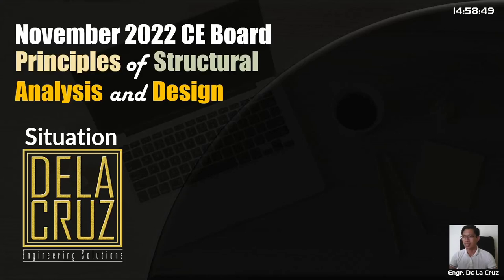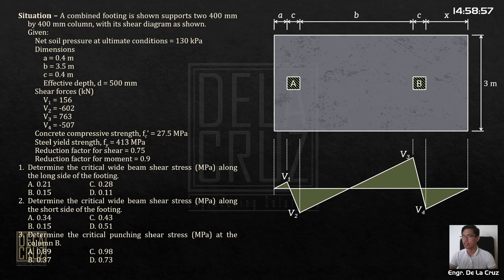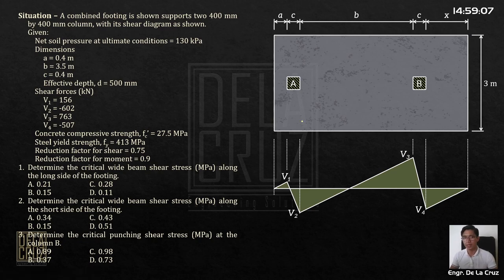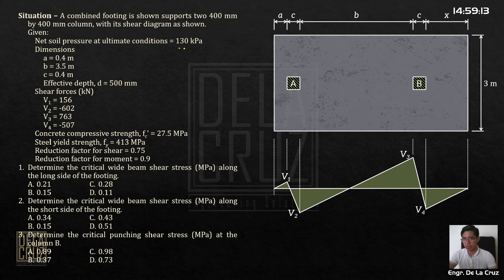Hello, welcome to another civil engineering board exam problem tutorial. Our problem today is about reinforced concrete — specifically a combined footing problem. The combined footing shown supports two 400 mm by 400 mm columns, column A and B. We need the net soil pressure at ultimate (factored) conditions.